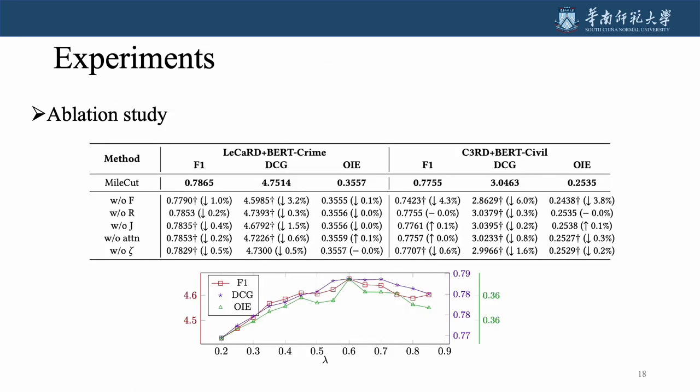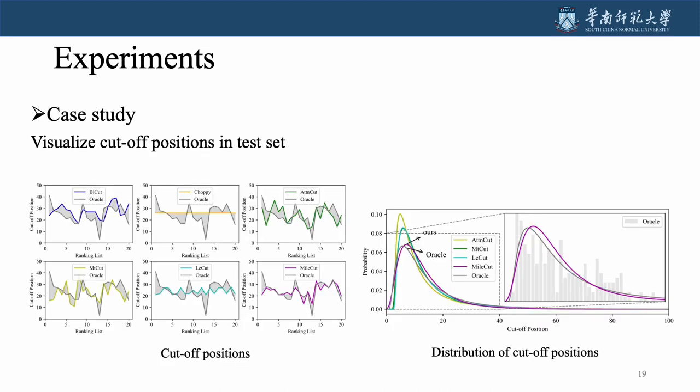Our evaluation studies show that removing any of components in Myocut will decrease the performance, and our settings achieve best performance. Our case studies show that Myocut best approximates the Oracle cutoff strategy among other competitive baselines.